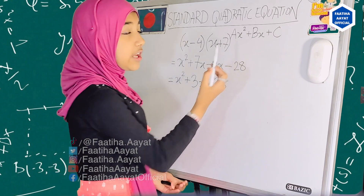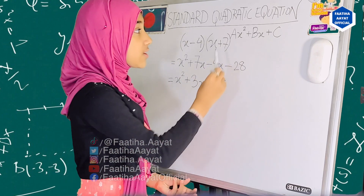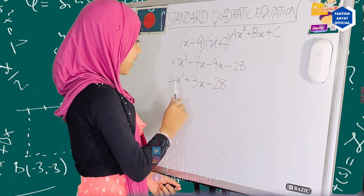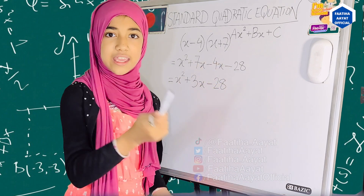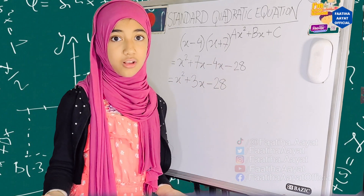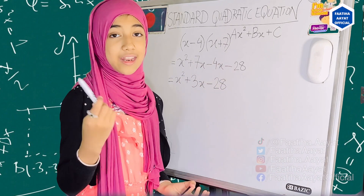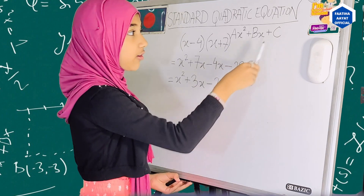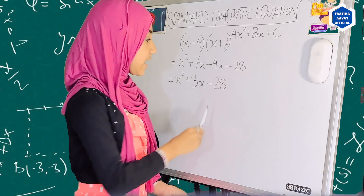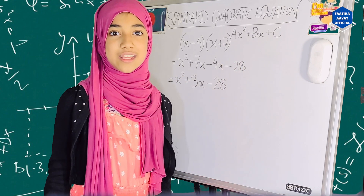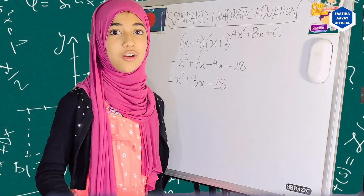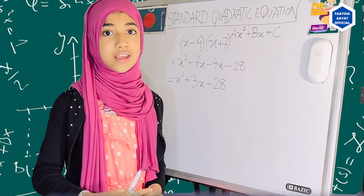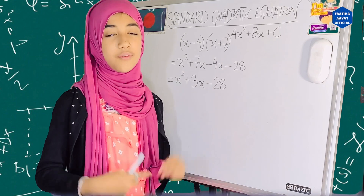Now, let's check our answer. Here, the formula was ax squared plus bx plus c. So we have x squared — our a here is 1, so we can think of that as correct. Then, 3x is our bx. And then our constant is c, which is minus 28. Yes, we were correct when writing the standard quadratic form of this equation.